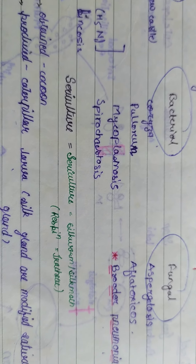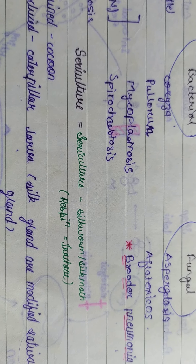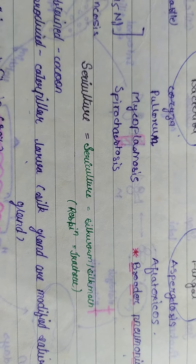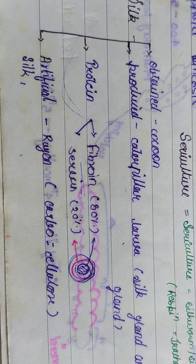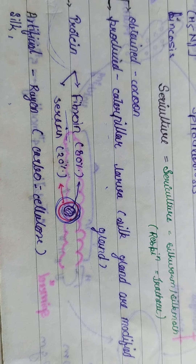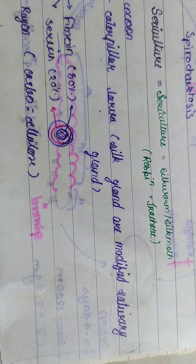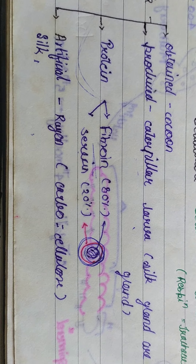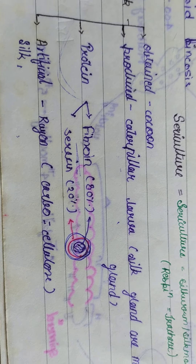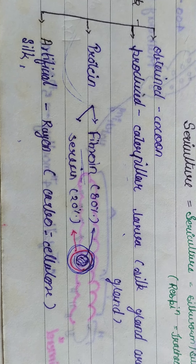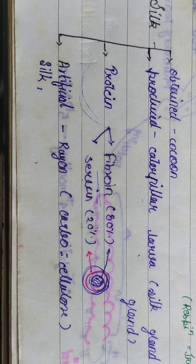Sericulture is the rearing of silkworm and silk moth for the production of silk fiber. Silk is obtained from the cocoon produced by caterpillar larva through the silk gland, which is a modified salivary gland. Silk protein consists of Fibroin at 80% and Sericin at 20%. Artificial silk is rayon, made from carbon and cellulose.